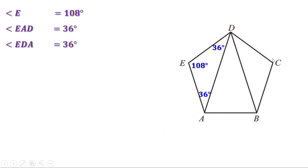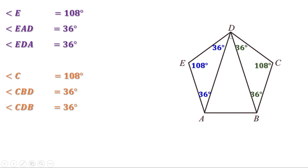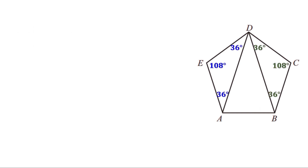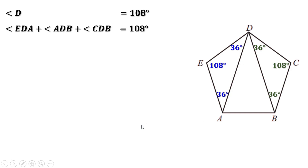Similarly, look at triangle BDC. Angle C is an angle in the regular pentagon, so these two base angles of triangle BDC are also equal. Therefore, these two angles are also equal to 36 degrees. Now, look at vertex D. The angle EDC is an angle in the regular pentagon, therefore it is equal to 108 degrees. But this angle is divided into three angles, so the sum of all three angles at vertex D is 108 degrees.